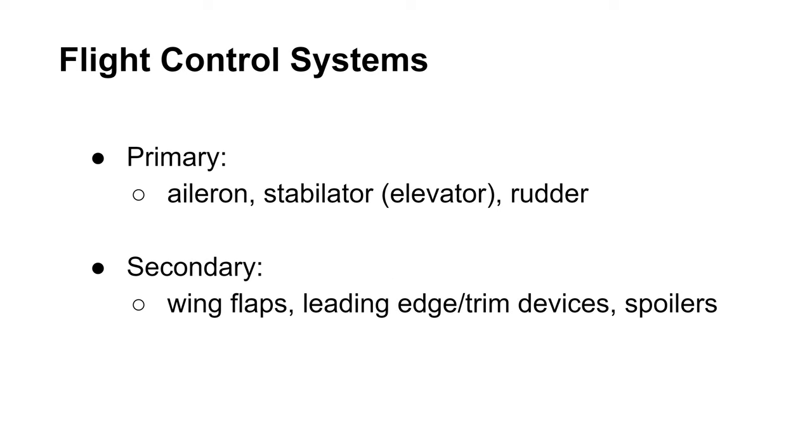The next important topic I will cover is airplane flight control systems. These systems can be primary or secondary. The primary flight control system consists of aileron, elevator or stabilator and rudder. Before explaining them, let's go over the three possible axes of rotation for the airplane.